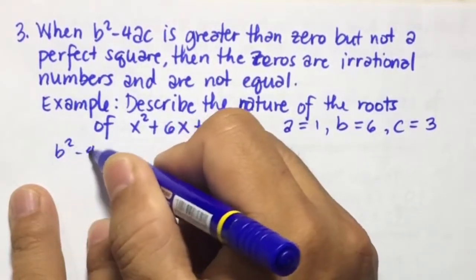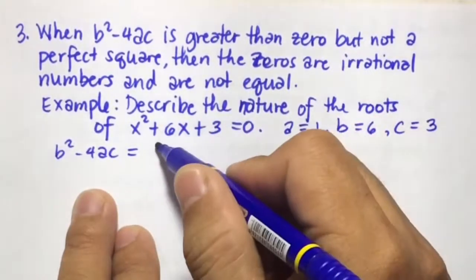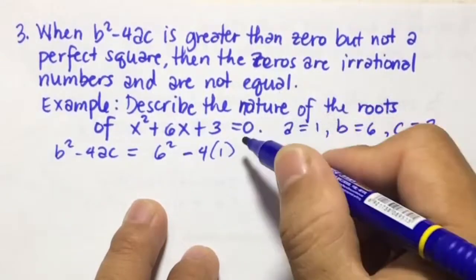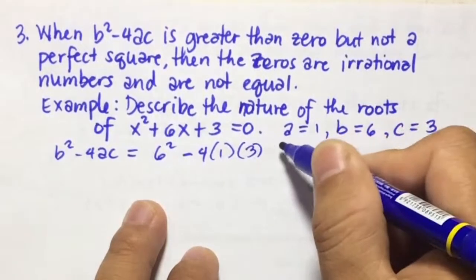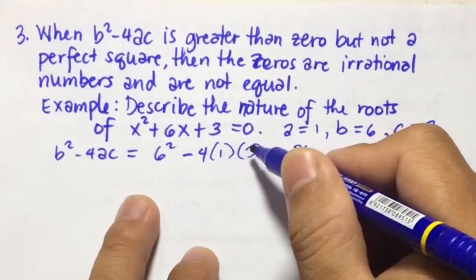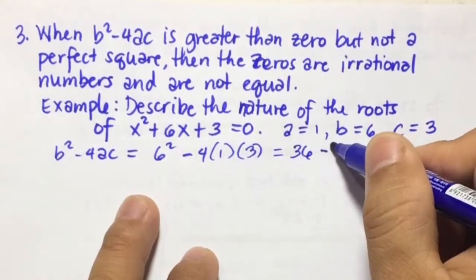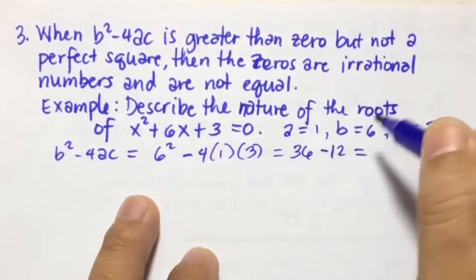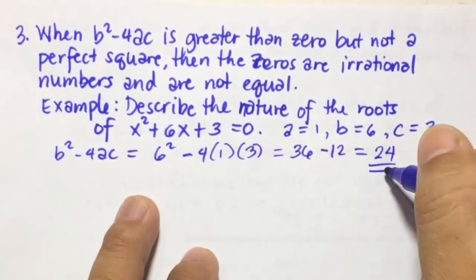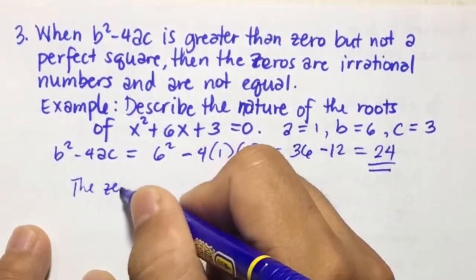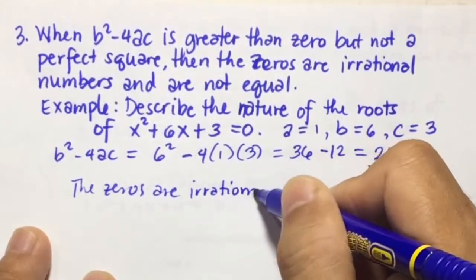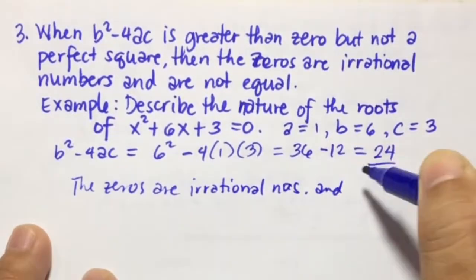Using the discriminant b squared minus 4ac, we have 6 squared minus 4 times 1 times 3. 6 squared is 36, and negative 4 times 1 times 3 is negative 12. So 36 minus 12 equals 24. Since 24 is greater than 0 but not a perfect square, the zeros are irrational numbers and are not equal.